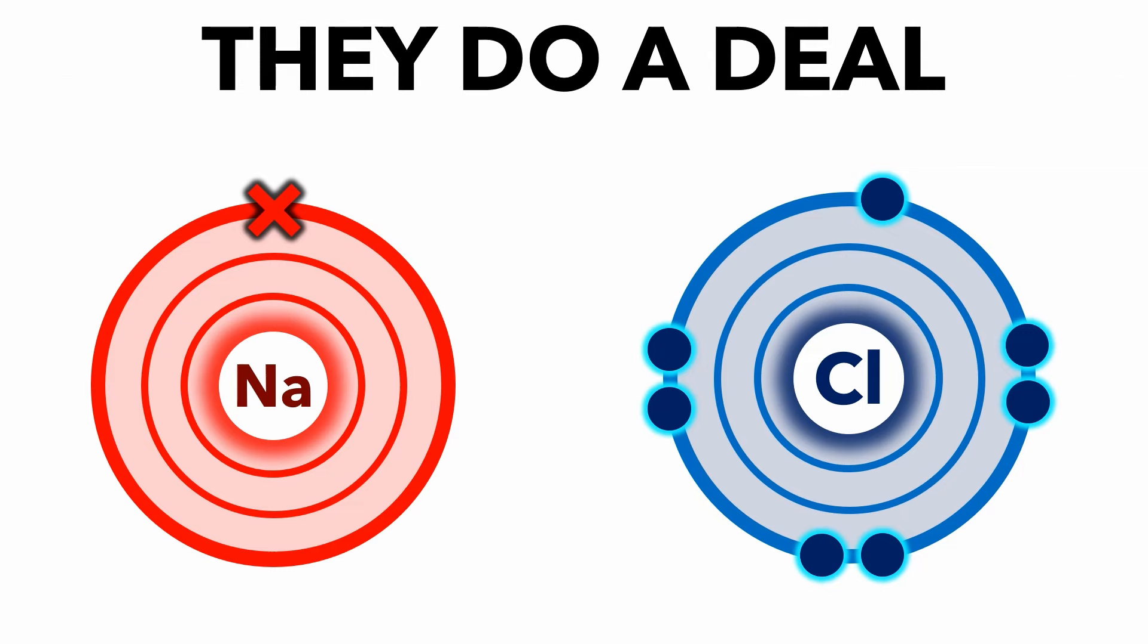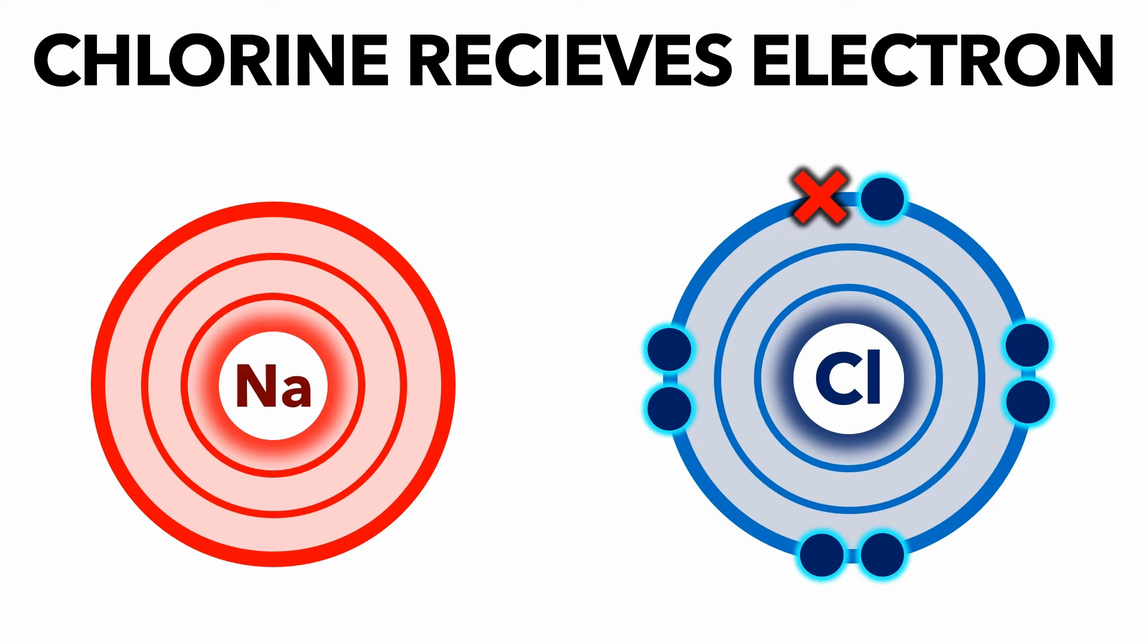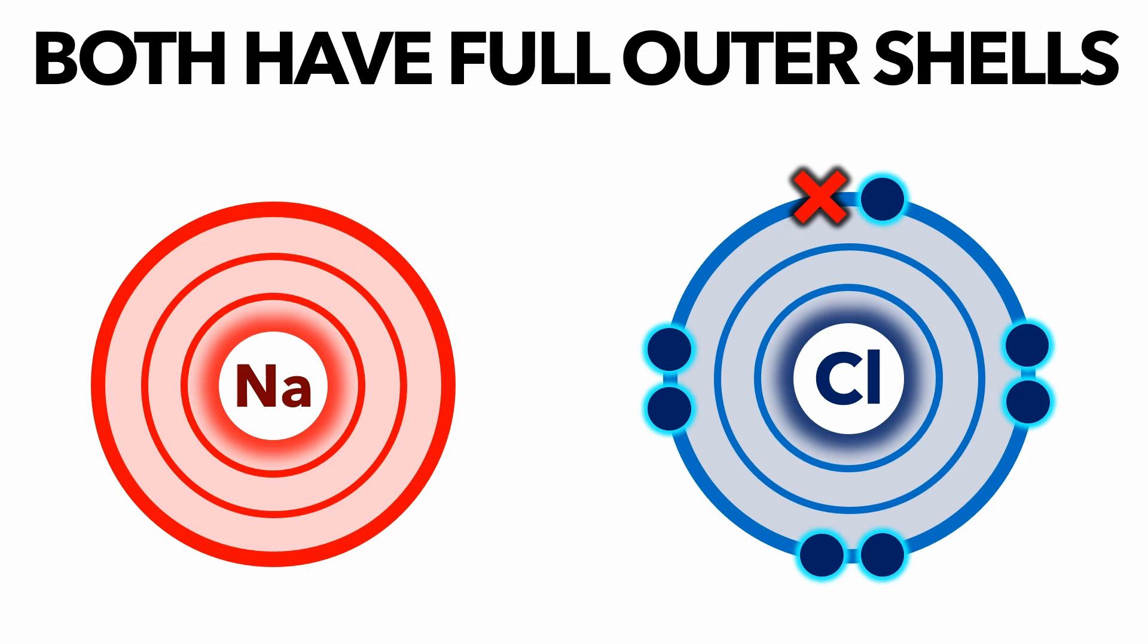So the metal and non-metal atoms do a deal. The metal sodium atom gives its electron away, and the non-metal chlorine atom receives it. Now they both have full outer shells.